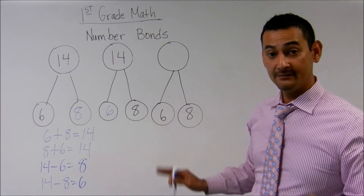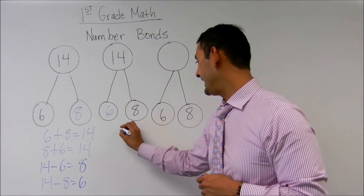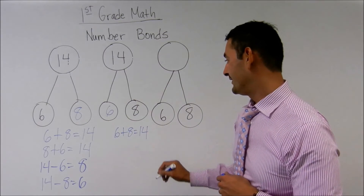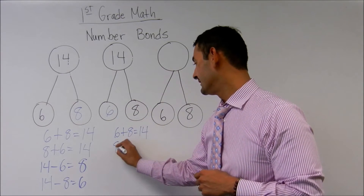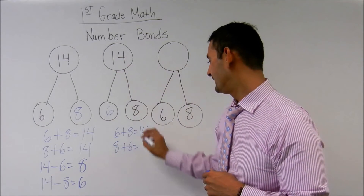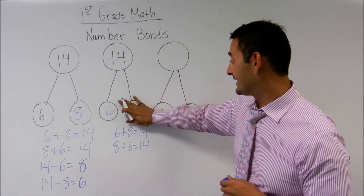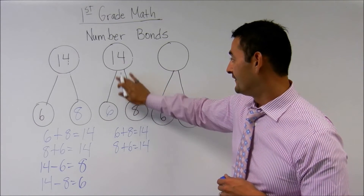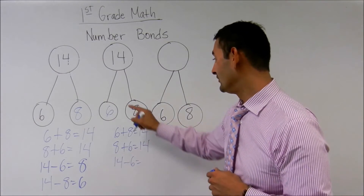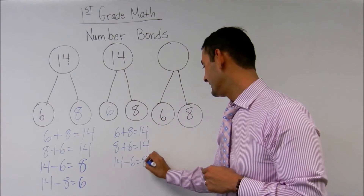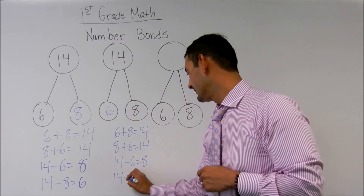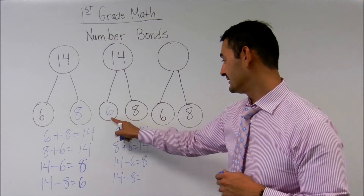So the 6 will go here. Now let's write some number sentences. 6 plus 8 equals 14, or 8 plus 6 equals 14. And now let's subtract: 14 minus 6 equals 8, and 14 minus 8 equals 6.